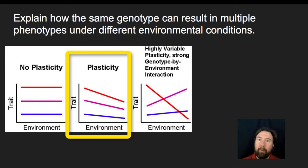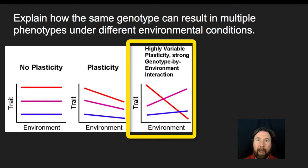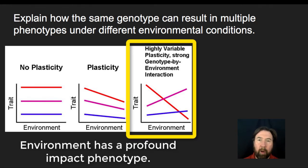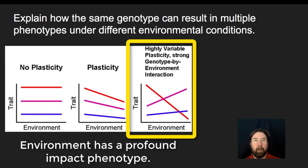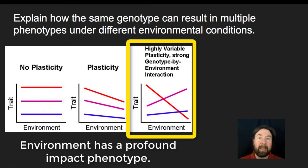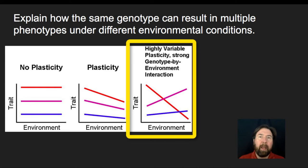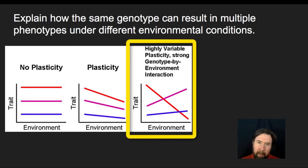There are other traits where plasticity is high, and you might not be able to tell what genes were involved. Certain forms of pigmentation may shift so dramatically that under different environmental conditions, what produces one type of trait under one set of conditions would look vastly different under another. We term this plasticity, and we'll be focusing on those middle and right-hand side graphs in the examples today.